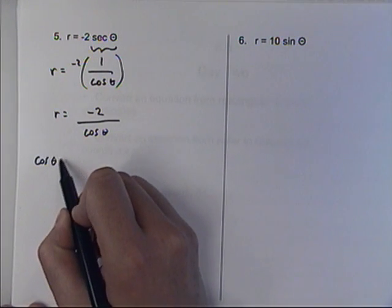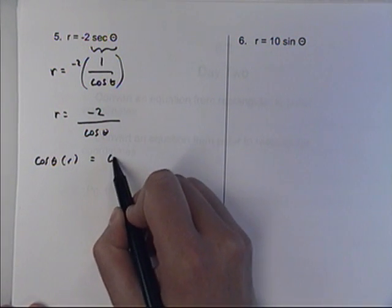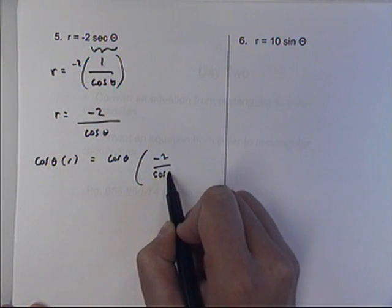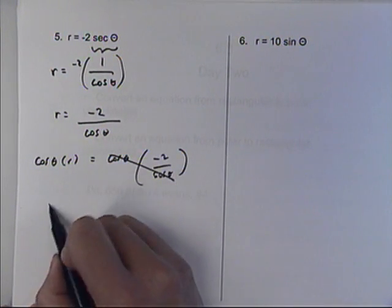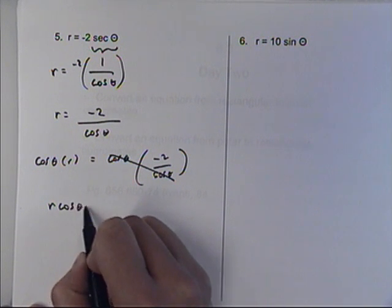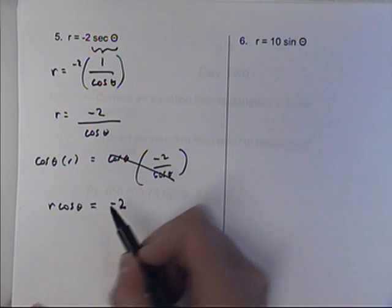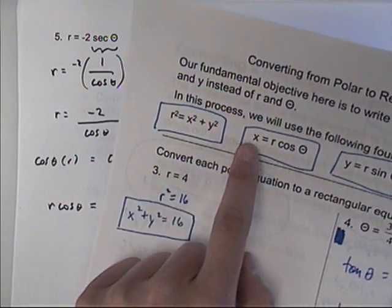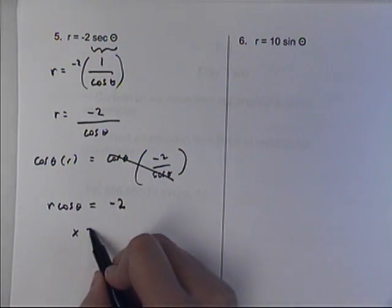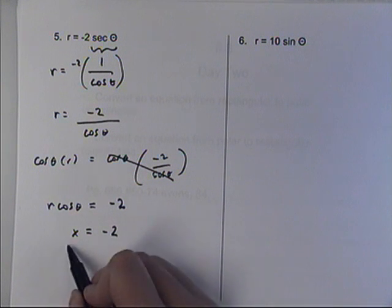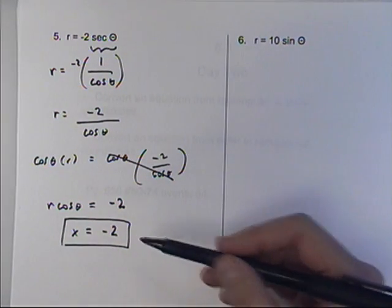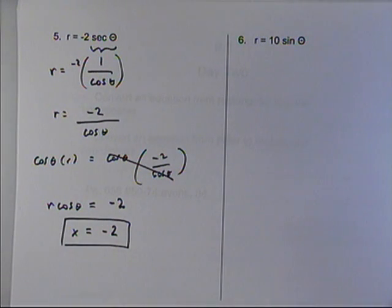So cosine theta times the r, cosine theta times this fraction. They cancel, and r cosine theta equals negative 2. So all I have to do is replace r cosine theta with x, and now I have an equation that just has x.